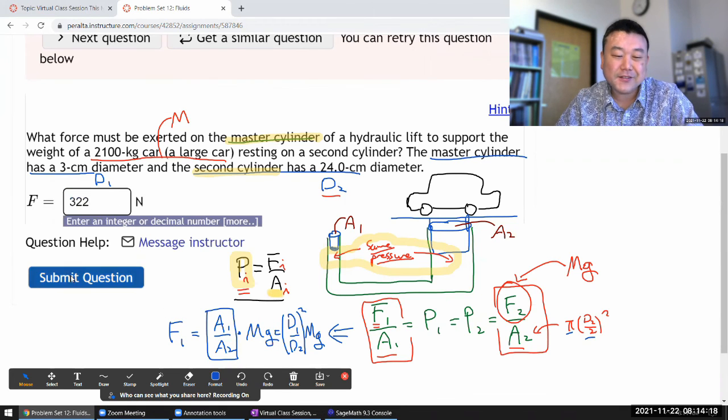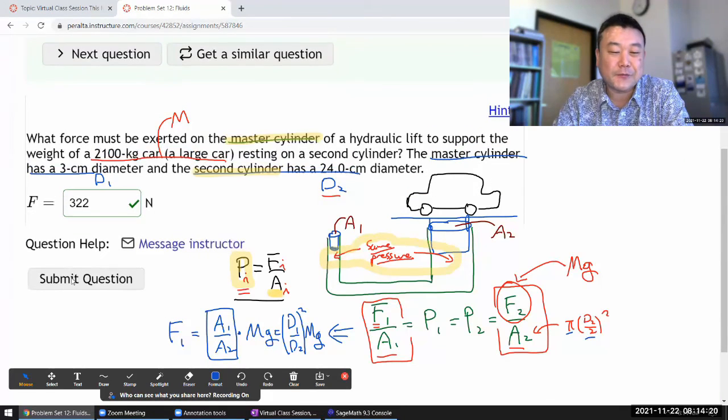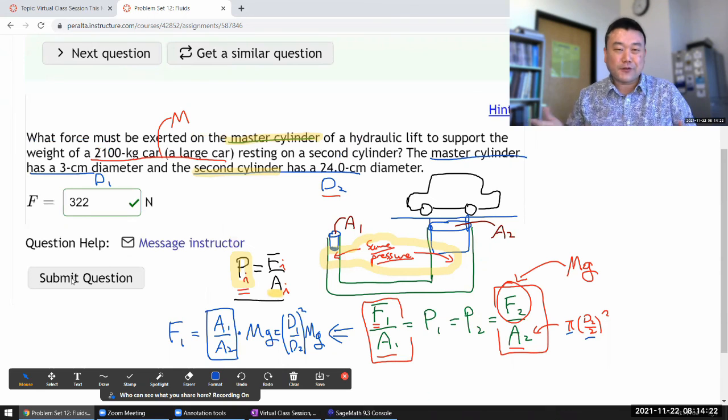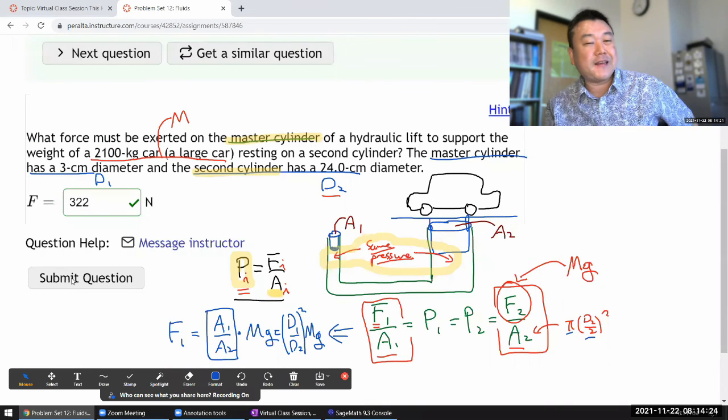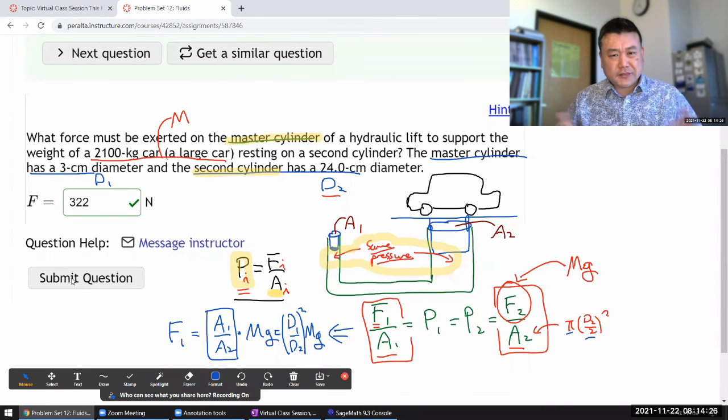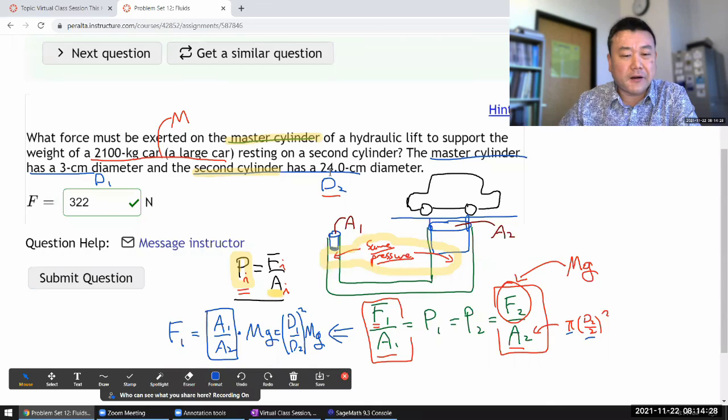That makes more sense. You know it's supposed to be a simple machine—it's a force multiplier. You want to apply less force than what you would need to if you're just directly lifting up the car.